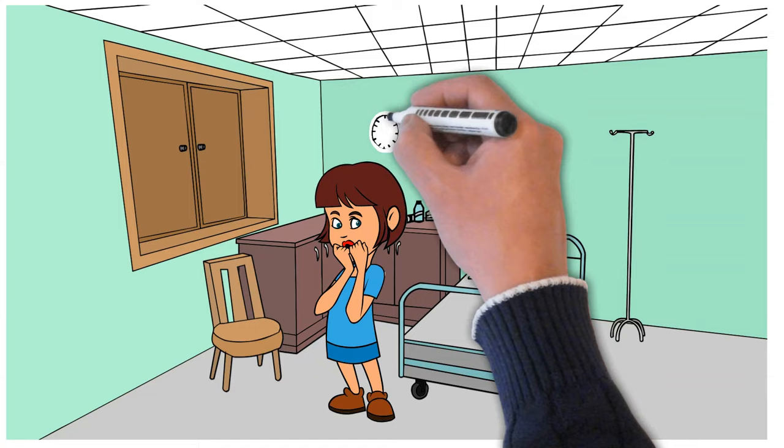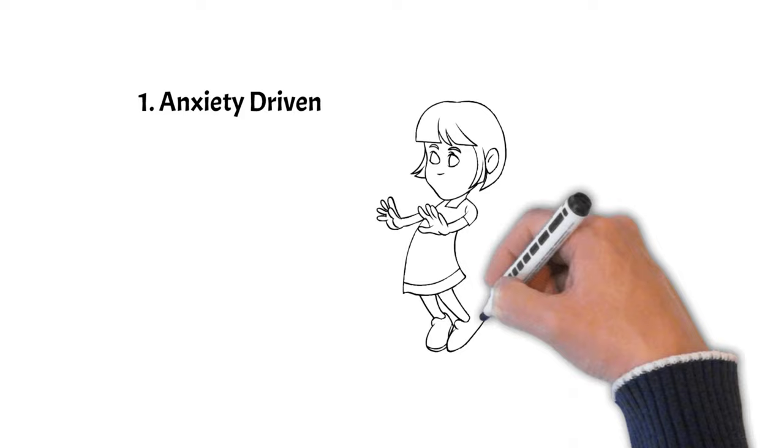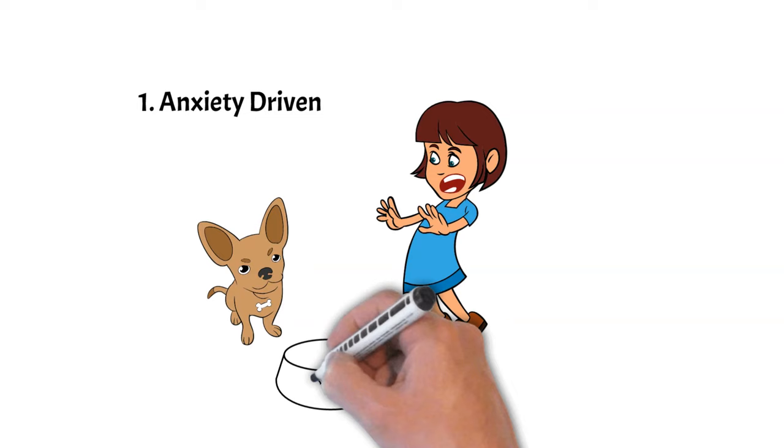Here are some reasons why people might find it challenging to get along with Enneagram type 6 individuals. Number 1: Anxiety Driven. Type 6s tend to be more anxious and can often imagine worst case scenarios, which may be exhausting for others who don't share their concerns.